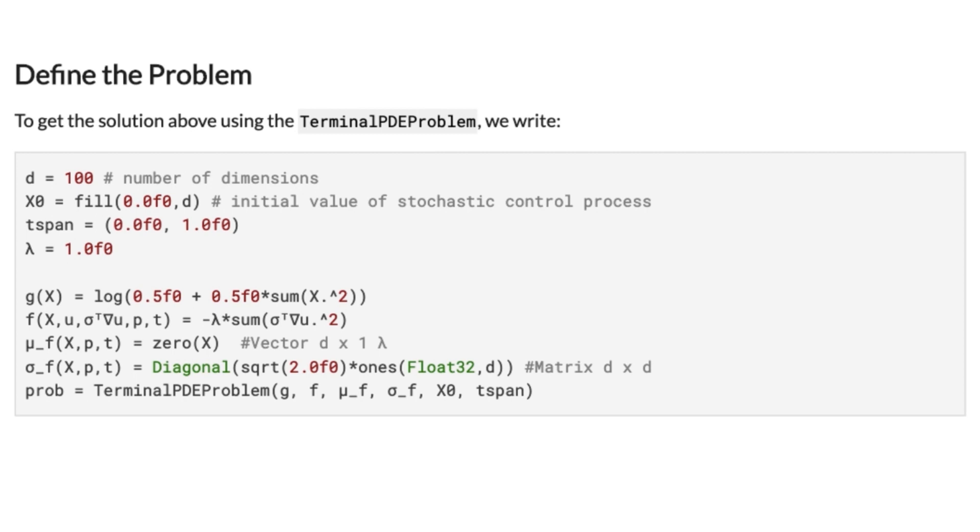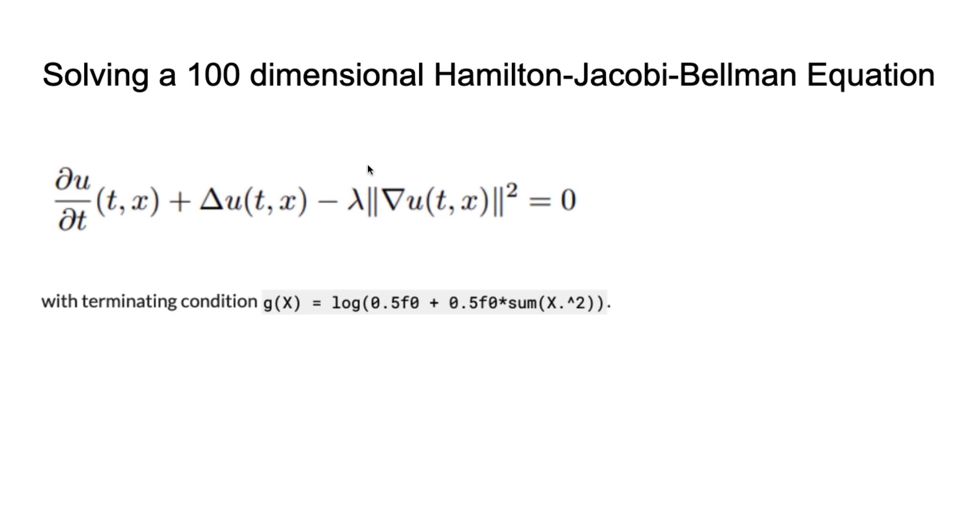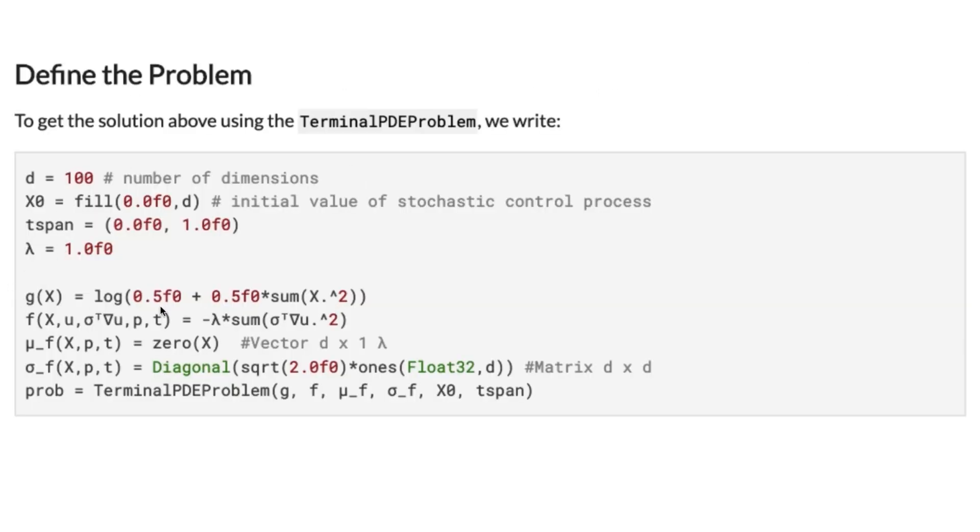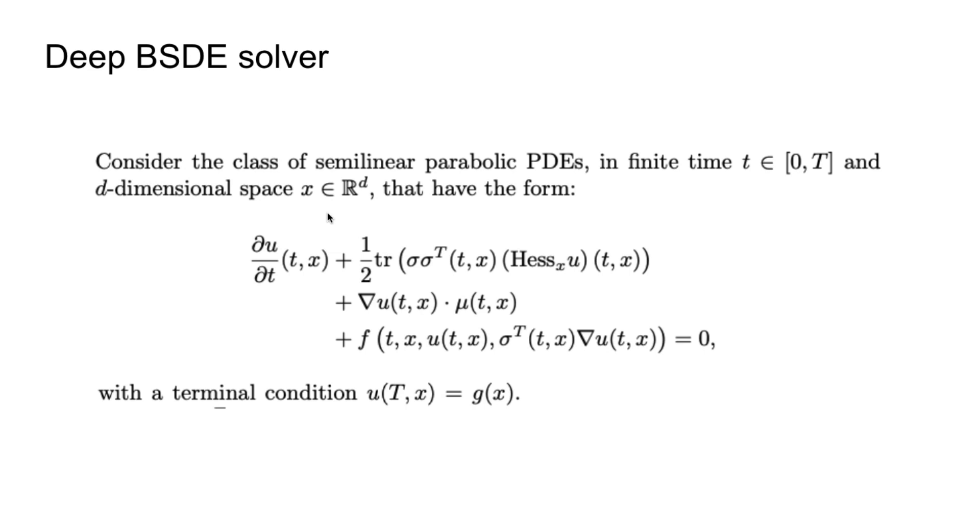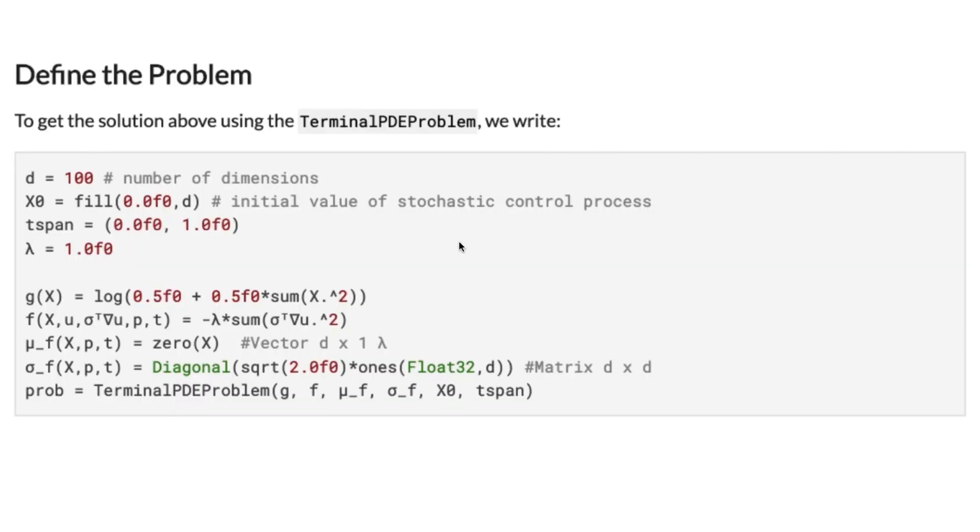First, we define the problem. We define dimensionality of the task - in our case it's 100 - and we initialize the initial value for the stochastic control process. We define the time span lambda for the equation, and the terminal condition. We also define functions that are contained in the general form of the equation: f, mu, and sigma. If we come back to the general form, we can see f, mu, and sigma here. We initialize the terminal PDE problem with all these functions and define variables.